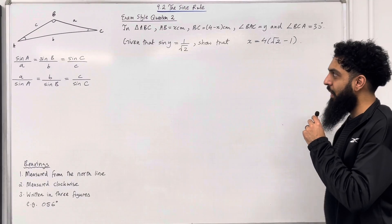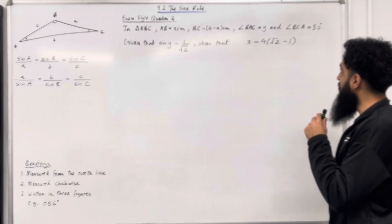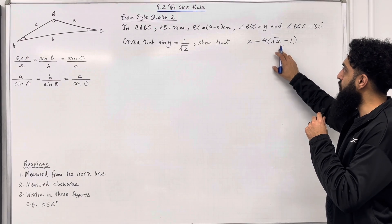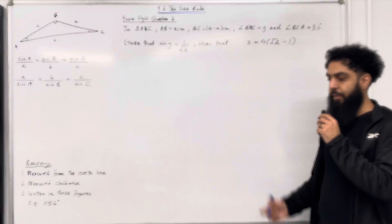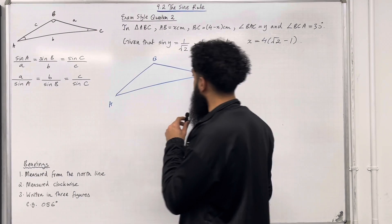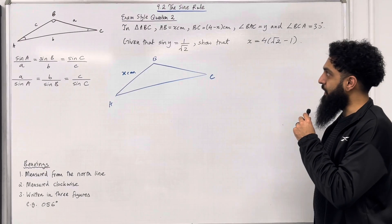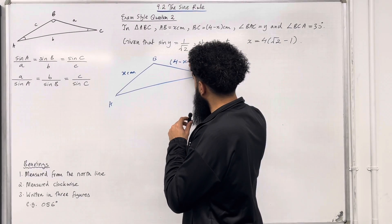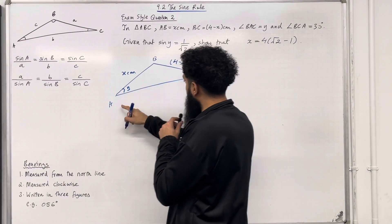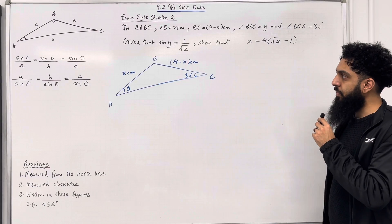Moving on to exam style question 2. In triangle ABC, AB is equal to x centimetres, BC is equal to 4 minus x centimetres, angle BAC is equal to y, and angle BCA is equal to 30 degrees. Given that sin y equals 1 over root 2, show that x equals 4(root 2 minus 1). I'll start by drawing triangle ABC, labelling A, B, C, the length AB as x centimetres, BC as 4 minus x centimetres, angle BAC as y, and angle BCA as 30 degrees.